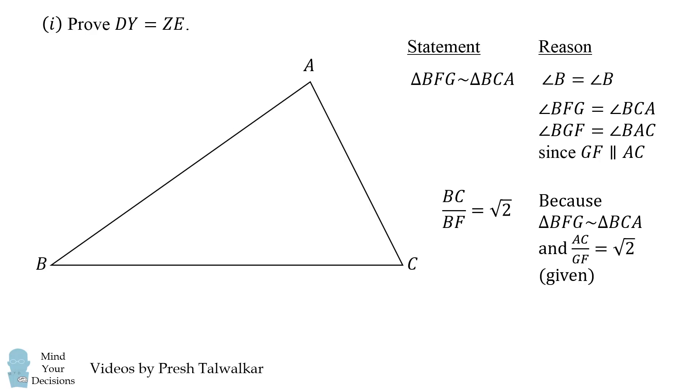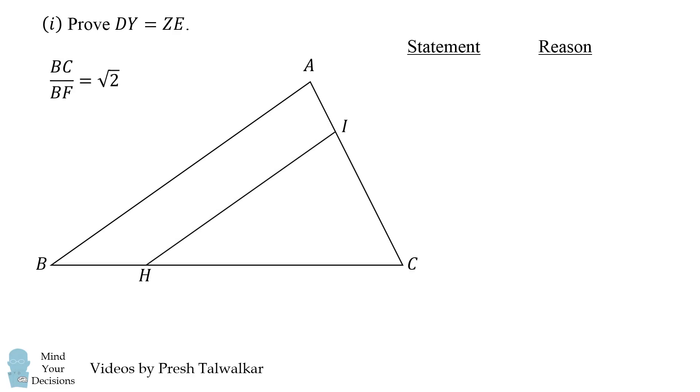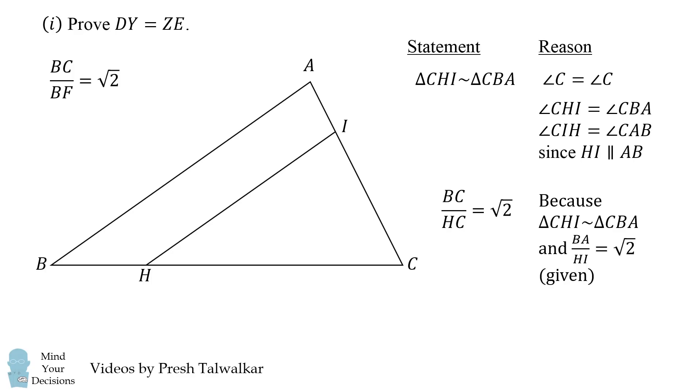Now we're going to do the same sort of thing with another set of triangles. Here we have that triangle CHI is similar to triangle CBA. Why is that? Well, they share a common angle C and the other angles are equal because HI and AB are given to be parallel. So we now can conclude that BC divided by HC is equal to the square root of 2. That's because the triangles are similar, and we were given that BA divided by HI is equal to the square root of 2.